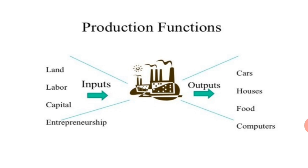When it comes to marginal product, MPL is equal to change in output divided by change in input. That comes to delta TP divided by delta L. That is about the marginal product.